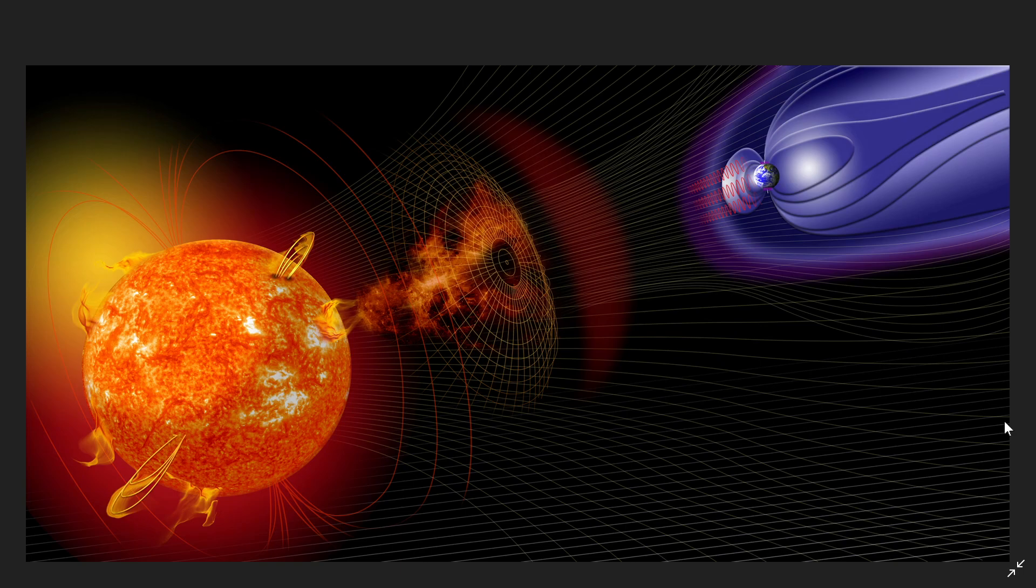When a solar flare erupts, the first wave that makes that absorption higher and might actually fade your signals temporarily, that is particles that go at speed of light. And the sun is eight minutes away in light speed.